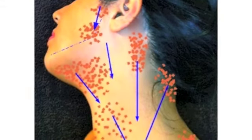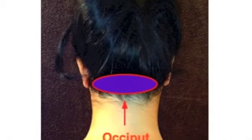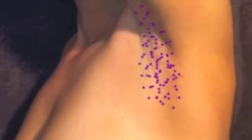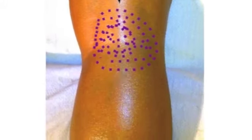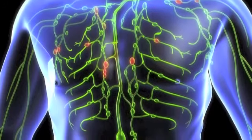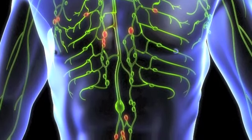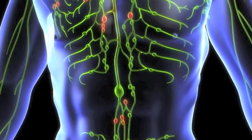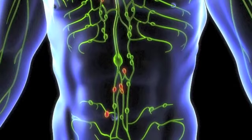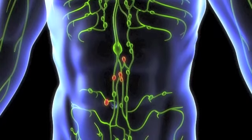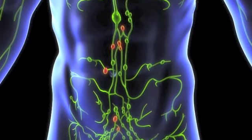The main lymphatic stations are located in the neck, the cervical zone, the armpits, the groin, and the popliteal fossa — the back of the knee. Secondary concentrations are found under the jaw, in the arms, the abdomen, and the ankles. These less concentrated areas also require careful, detailed work, which will be covered in the next videos.